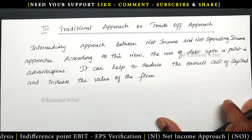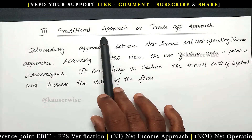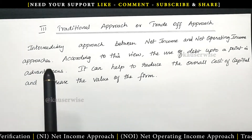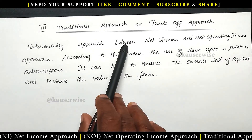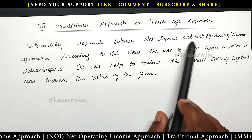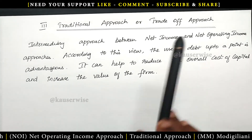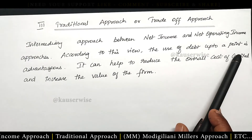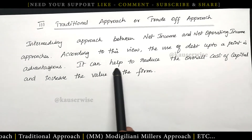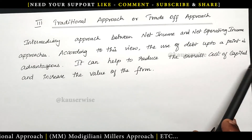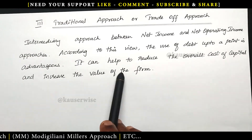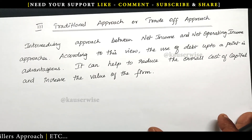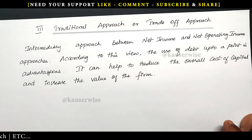Before we see the numerical problem, let us understand what is the traditional approach. It is an intermediary approach between the net income approach and the net operating income approach. According to this view, the use of debt up to a point is advantageous — it can help to reduce the overall cost of capital and increase the value of the firm. So let's understand this concept with the help of a numerical problem.